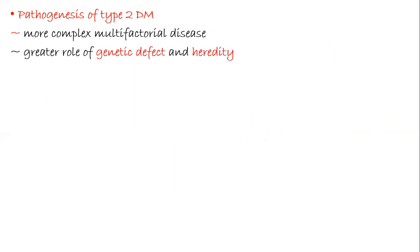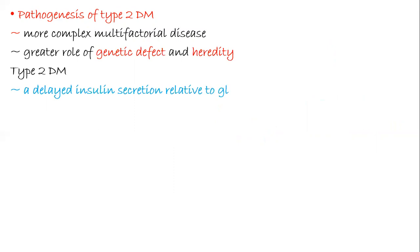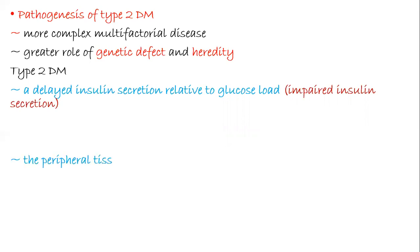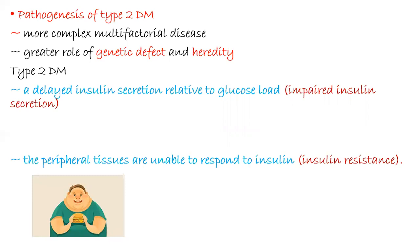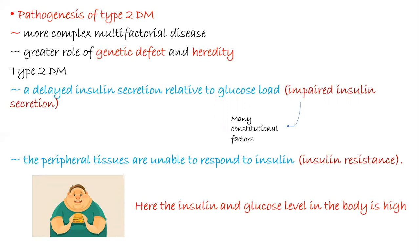Now we'll see the pathogenesis of type 2 diabetes mellitus. It is more complex and multifactorial, with a greater role played by genetic defects and heredity. Type 2 diabetes occurs due to delayed insulin secretion relative to glucose load — termed impaired insulin secretion — and peripheral tissues being unable to respond to insulin, that is, insulin resistance. Insulin resistance is mostly seen in obese people. In type 2 diabetes, both insulin and glucose levels are high because the body secretes insulin but fails to utilize it.